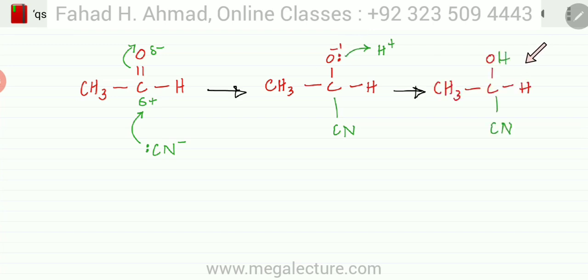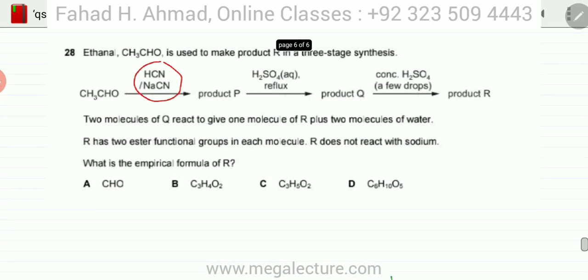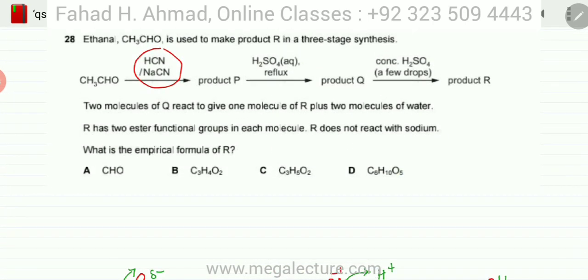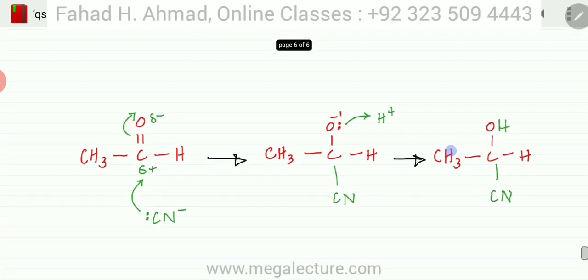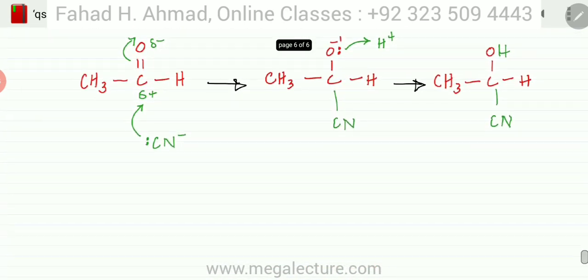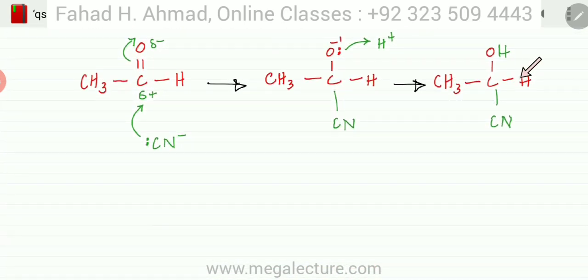This is the final molecule that is going to be produced - this is a cyanohydrin. So this is the first reaction and I've told you about the mechanism. After that the product P is being heated with sulfuric acid.